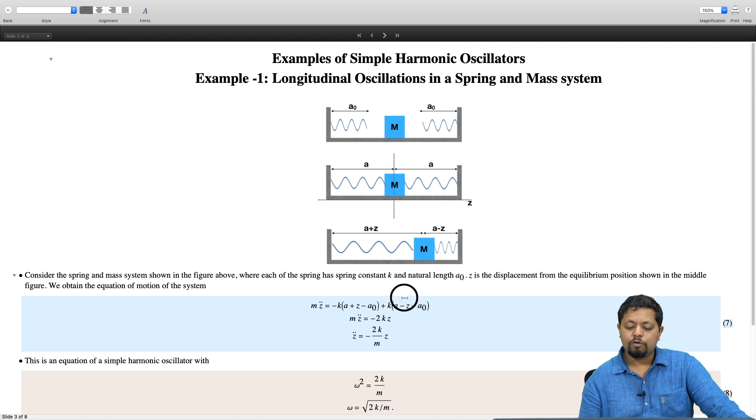For this other spring, the force is to the left, so that is k times (a minus z minus a naught). A minus z is its current length minus a naught, the natural length. Taking the difference of the two gives me the force because of this spring onto this mass.